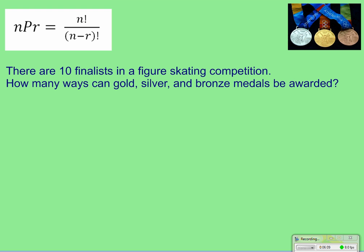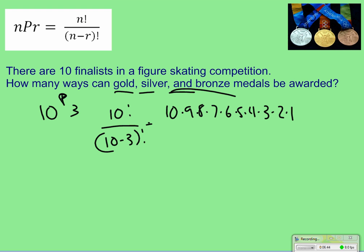So, remember, this is where order matters. So, 10 finalists in a figure skating competition. How many ways can gold, silver, bronze be awarded? So, it doesn't matter if you're first, second, or third. It absolutely tells you which medal you're going to get. So, this is going to be saying, out of 10 finalists, P3. How many different ways can the medals be awarded? So, that's going to be 10 factorial over 10 minus 3 factorial. So, that's going to be 10, 9, 8, 7, 6, 5, 4, 3, 2, 1, so it's going to be 7, 6, 5, 4, 3, 2, 1. Cancel, cancel, cancel, cancel, cancel, cancel, cancel. So, that's going to be 10 times 9 times 8. So, that's going to be 720 ways.